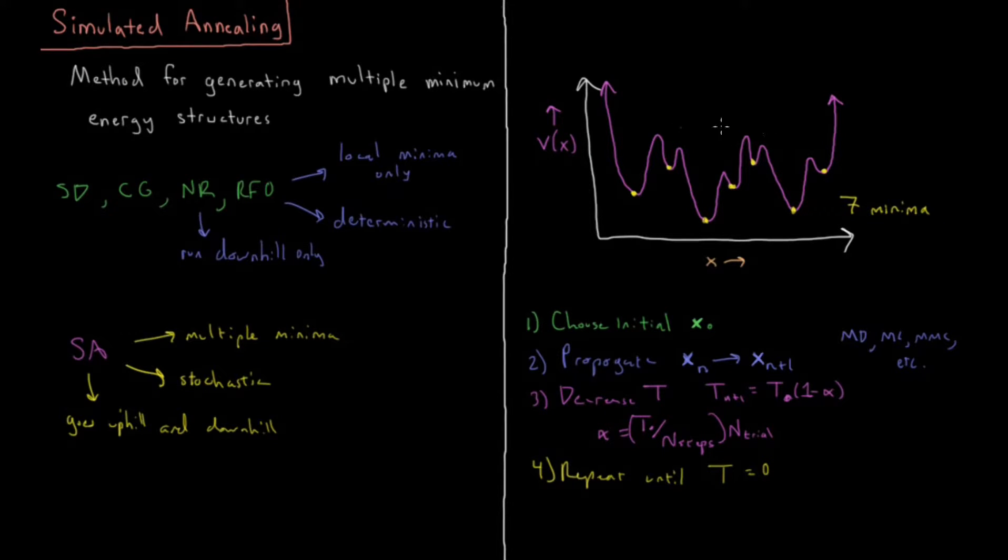But each time we do this, we might get a different result because whenever the energy gets lowered, we might be in a different place as the energy lows, and we might go to a different minimum each time as the simulation occurs.